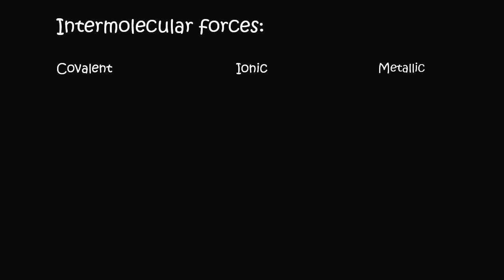We said that covalent is only between two non-metals, whereas ionic is between a metal and a non-metal. And then lastly metallic is just a single metal. Furthermore, we said that covalent is when the electronegativity difference is less than 2.1. Ionic is when it's more than 2.1. And then with metallic we don't really look at that.